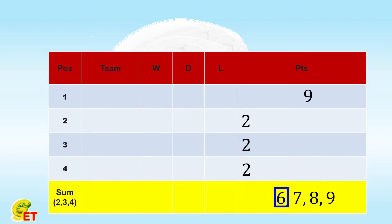If there are in total 7 points, it means there is exactly 1 game that doesn't end in a draw. The winning team in this game has 1 win and 1 draw, and scores 4 points. The losing team has 1 loss and 1 draw, and scores 1 point. The other team has 2 draws and scores 2 points.